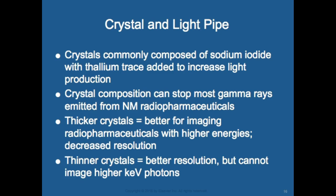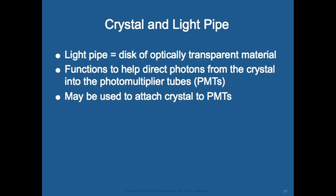Crystals are commonly composed of sodium iodide with thallium trace added to increase light production. Crystal compositions can stop most gamma rays emitted from nuclear medicine pharmaceuticals. Thicker crystals are better for imaging radiopharmaceuticals with higher energy but you lose resolution; thinner crystals have better resolution but can't handle higher keVs. A light pipe is a disk of optically transparent material whose function is to help direct photons from the crystal into the photomultiplier tubes.